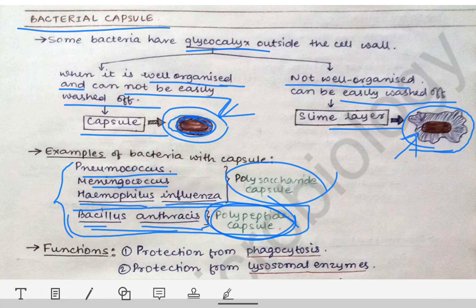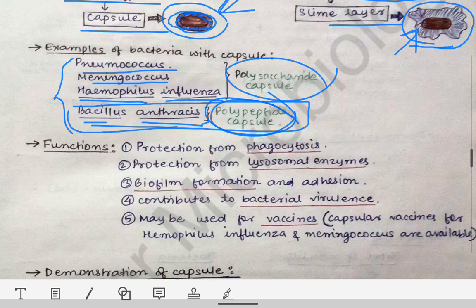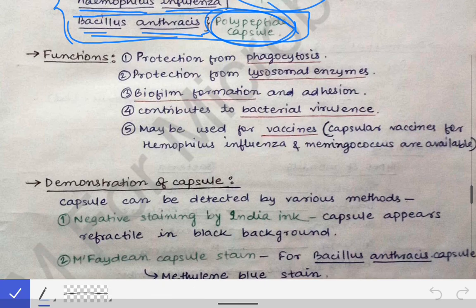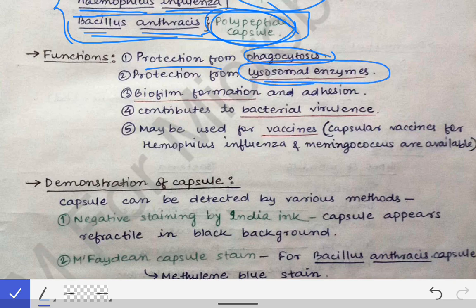The function or importance of the capsule to bacteria is that it provides protection from phagocytosis and lysosomal enzymes. If there is an additional layer surrounding the bacterial cell wall, it will obviously protect the bacteria from enzymes and phagocytosis. So yes, the capsule provides protection from phagocytosis and lysosomal enzymes.